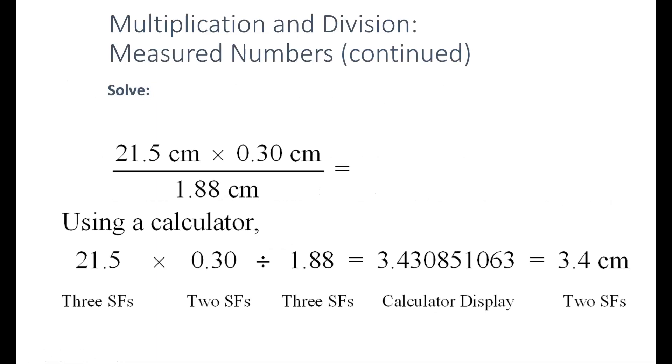Here's another example using multiplication and division combined. I have 21.5 centimeters times 0.30 centimeters divided by 1.88 centimeters. If I multiply 21.5 times 0.3 and divide by 1.88, I get quite a long value in my calculator display, 3.43085, and so on. But my original values have three significant figures, two significant figures, and three significant figures.